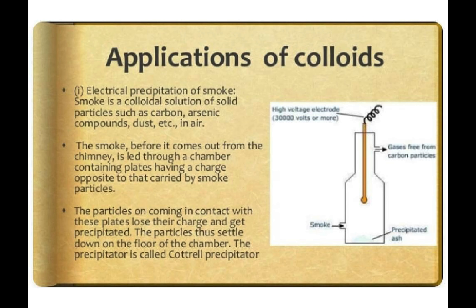Now, the applications of colloids. Electrical precipitation of smoke: smoke is a colloidal solution of solid particles like carbon, arsenic compounds, and dust in air. Before the smoke exits the chimney, it is made to pass through a chamber containing plates with a charge opposite to that of the smoke particles. The particles lose their charges on contact with the plates — high voltage electrodes of 30,000 volts or more are used — and the precipitated ash is collected. This device is called the Cottrell precipitator.